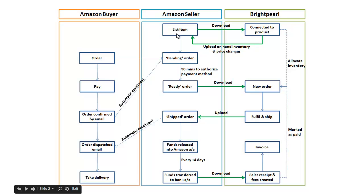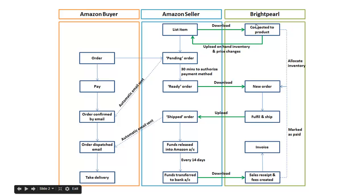So how does that work with Brightpearl? First of all you list the item on Amazon. You then download those Amazon listings into Brightpearl and either connect them to existing products or create new Brightpearl products for those items. You then manage the inventory levels of those items in Brightpearl, and Brightpearl will tell Amazon the right inventory levels.